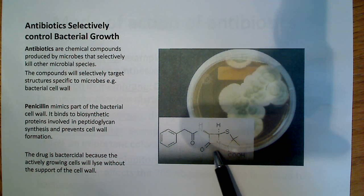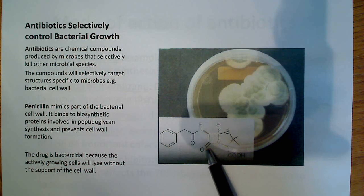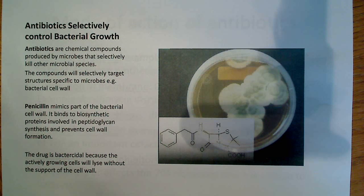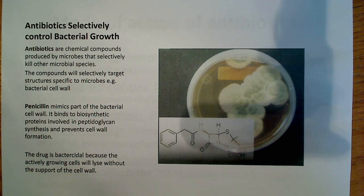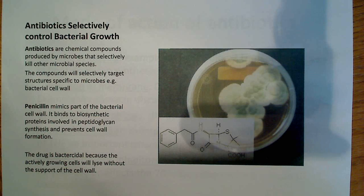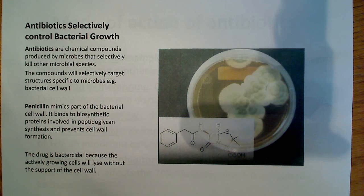This is called the beta-lactam ring, and this ring is where all the activity of penicillin really occurs — it's the active area of the drug. There are several other antibiotics that share a similar ring, often with different functional groups attached. The drug is bactericidal, meaning it kills the bacteria. Actively growing cells will lyse without the support of the cell wall, because penicillin mimics and weakens the cell wall, and as the cell grows, it ends up lysing.